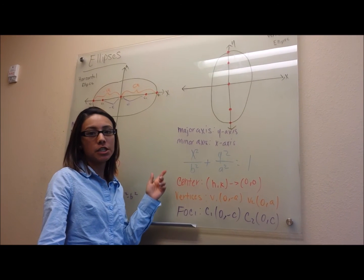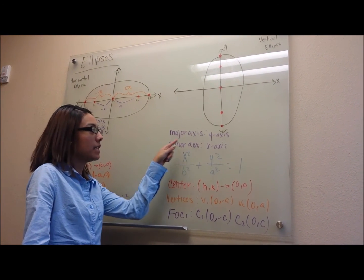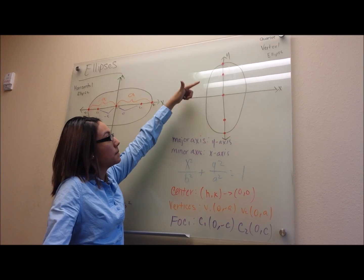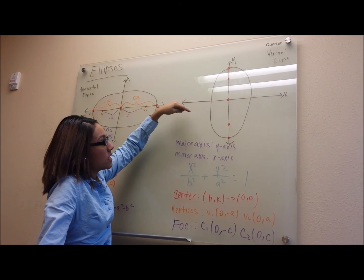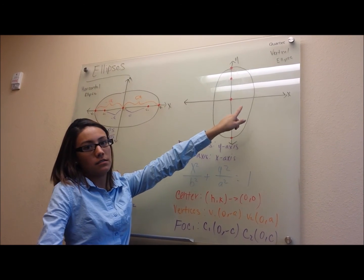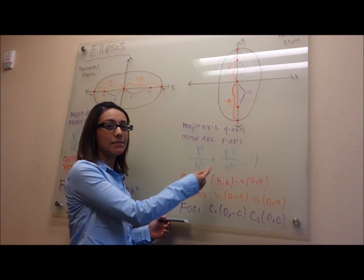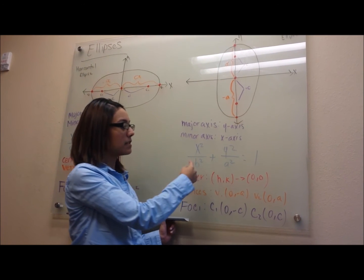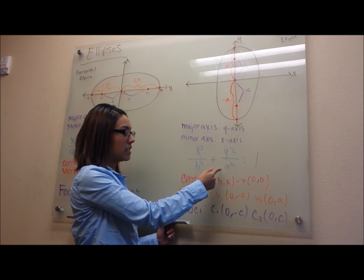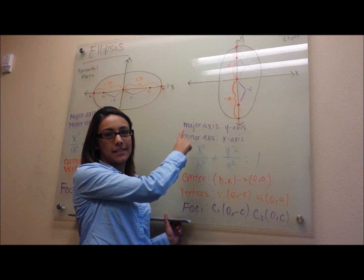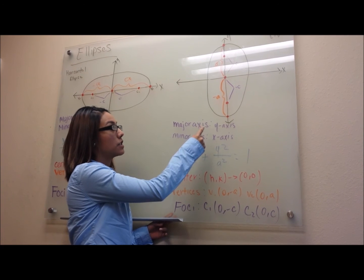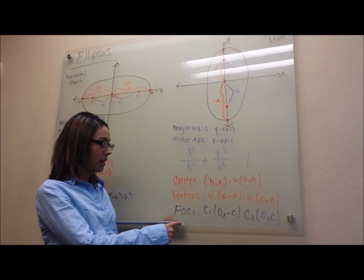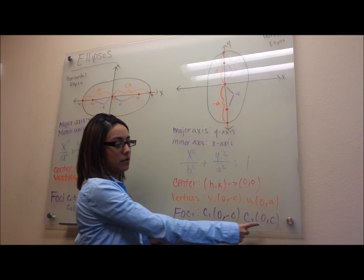For the vertical ellipse, it's the same procedure, but we have different components for the major and minor axis. In this case, the major axis — the longest diameter — is going to be the y-axis, and the shortest diameter is the x-axis. This is our vertical ellipse equation: x squared over b squared plus y squared over a squared equals 1. It's the same as the horizontal ellipse except that a and b are now switched, since a is under y, which is now our major axis. Our center is still at the origin. Our vertices are now 0, negative a and 0, a. And our foci are 0, negative c and 0, c.